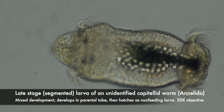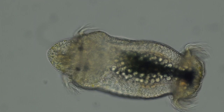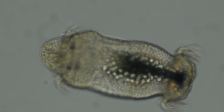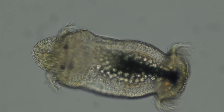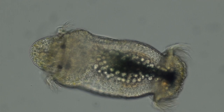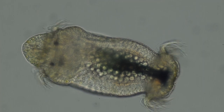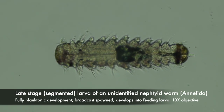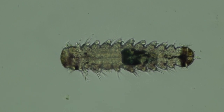And here's another capitellid larva, but that of another species. This species has non-feeding larvae. The spheres in its digestive system are lipid droplets that the mother had placed in the egg. This larva also has a telatroch. And one more annelid larva, that of a nephtyid. This is ready to metamorphose — you can see that it has lots of segments, parapodia, and chaetae.